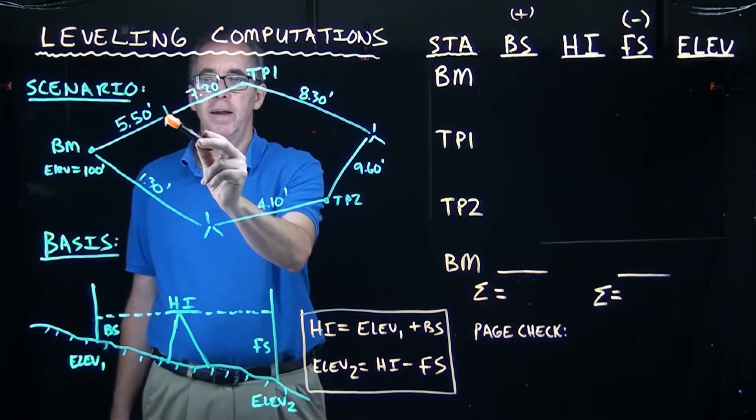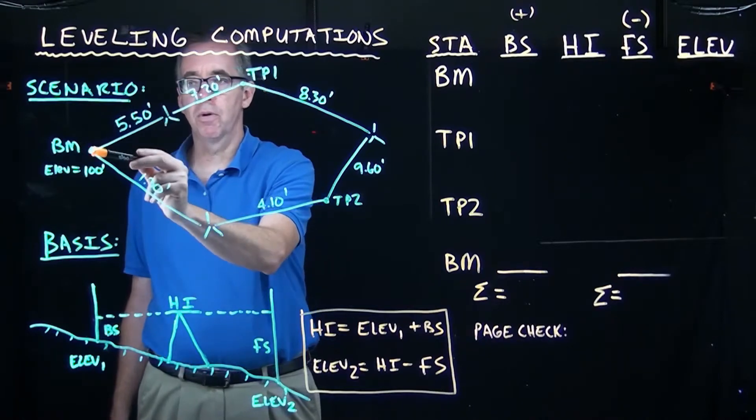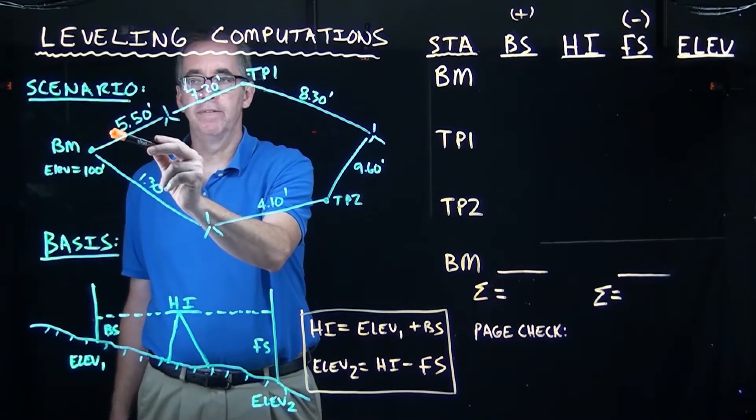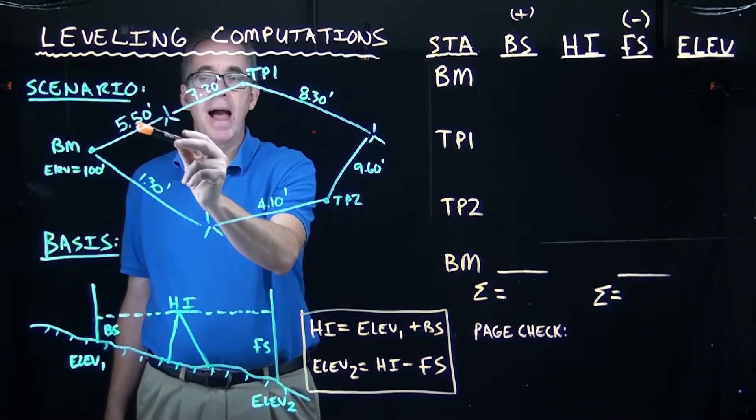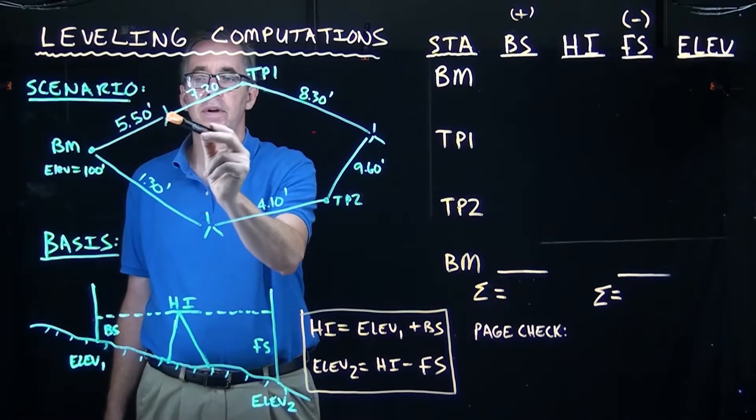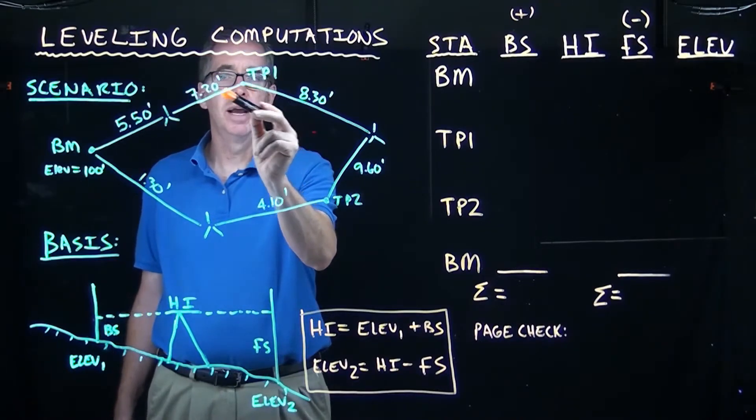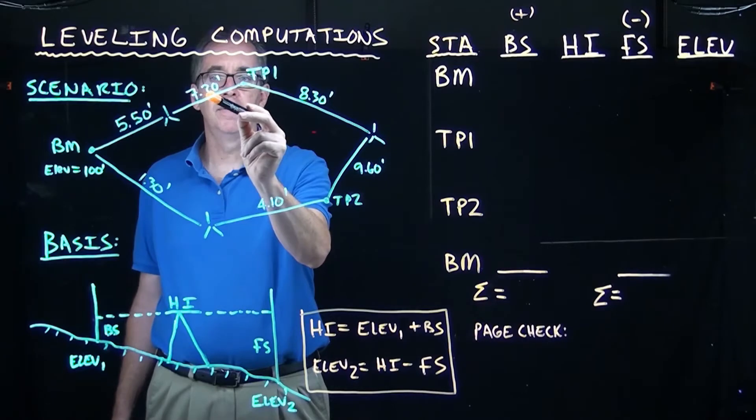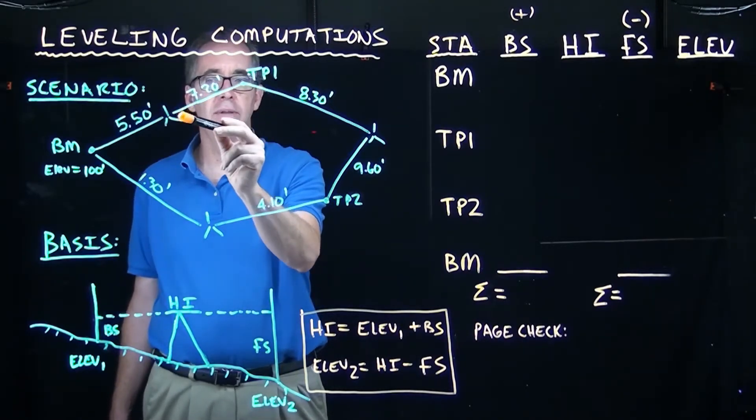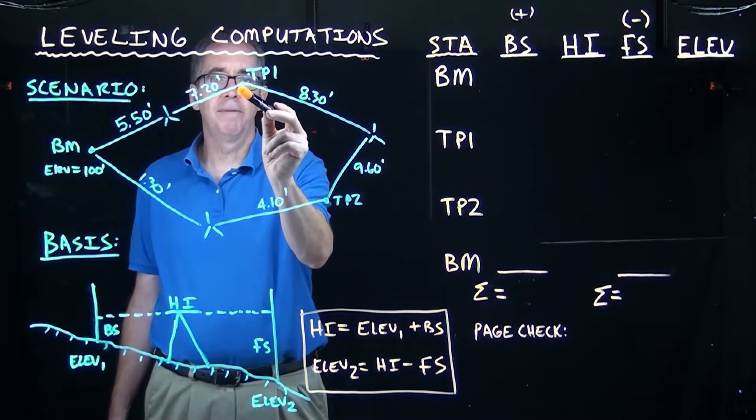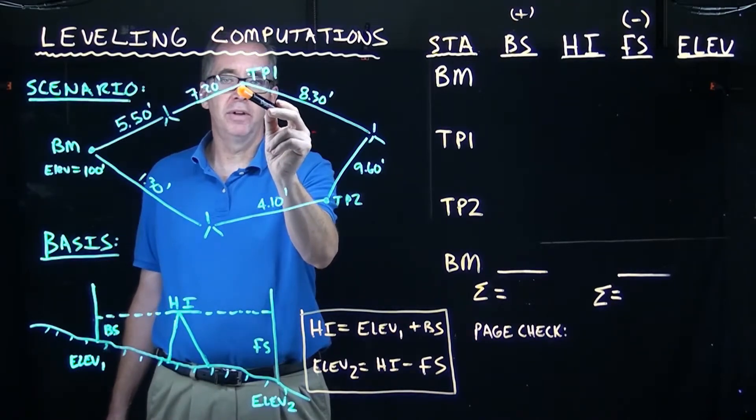So I set up my tripod here. I look backwards and I'm getting a reading of 5.5. So my backside to start off with is 5.5. Then I rotate the level, move the Philadelphia rod over here, and I do a foresight, 7.2. Once I've completed those two measurements, I keep my rod at the turning point.